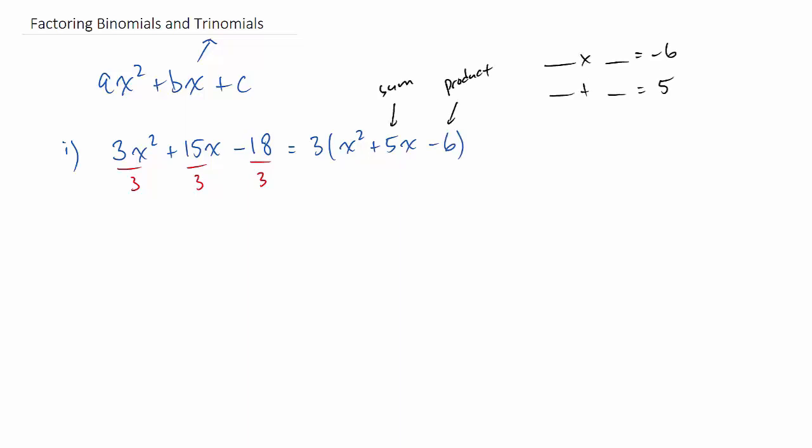And you say, okay, well what multiplies to make negative 6 but adds up to make 5? Think about it for a little bit. Then, okay, how about 6 and negative 1? And that seems to work. So you break it apart into its factors, and you get three factors of the trinomial. That's called being completely factored. Next up, similar looking one.